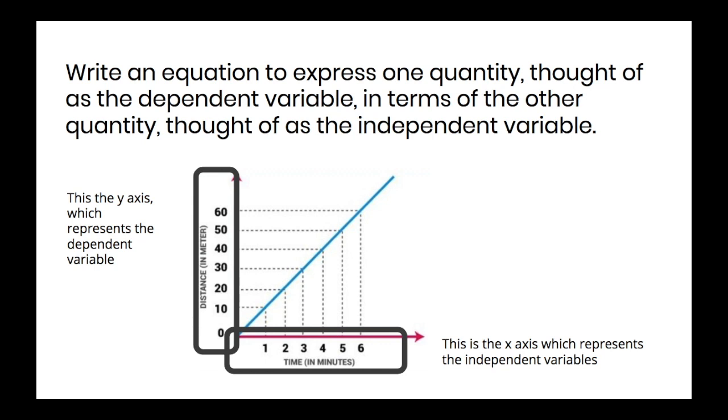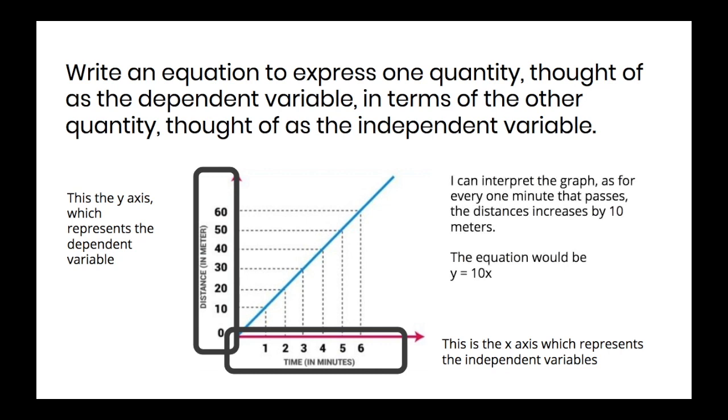So not every, but in most situations, time is independent. It is an independent variable. So most quantities that have a relationship depend on time. For example, it may take me 30 minutes to cook a batch of 24 cookies. The amount of cookies that I bake is dependent on the amount of time that passes. So I can interpret this graph, which this is a distance time graph. I can interpret this as for every one minute that passes, the distance increases by 10 meters. So the equation would be y equals 10x, x being time in minutes and y being the total distance.